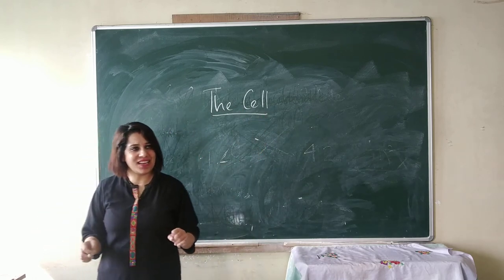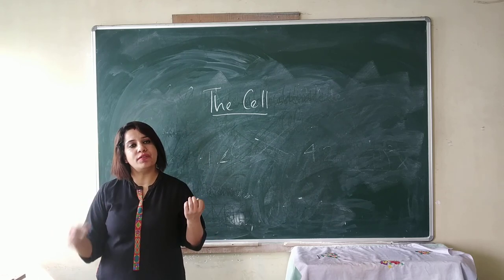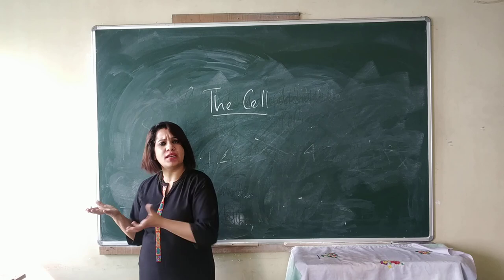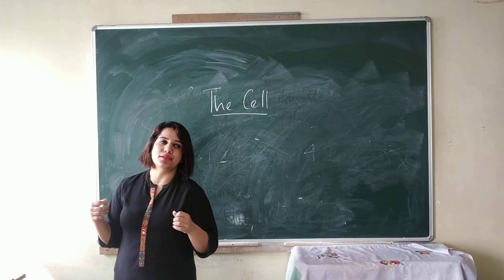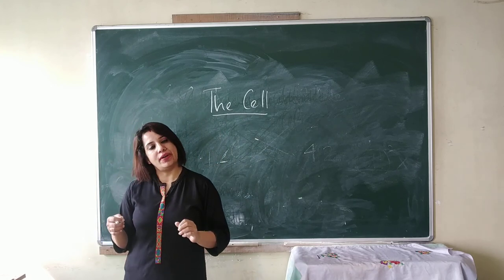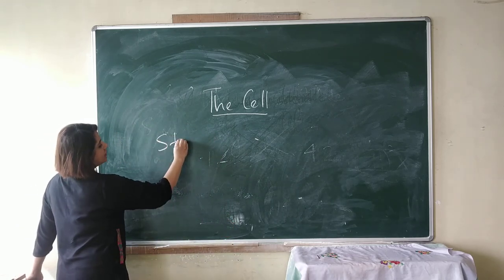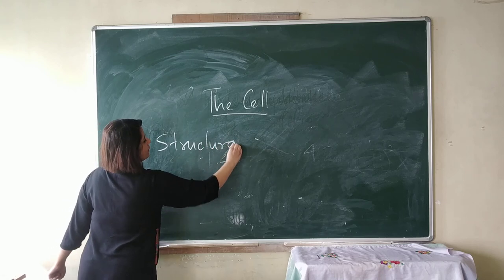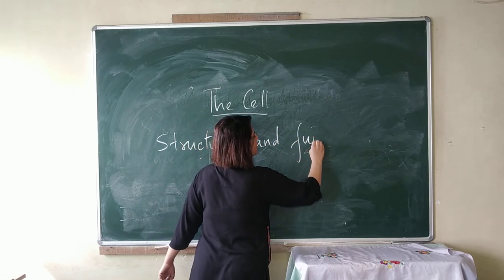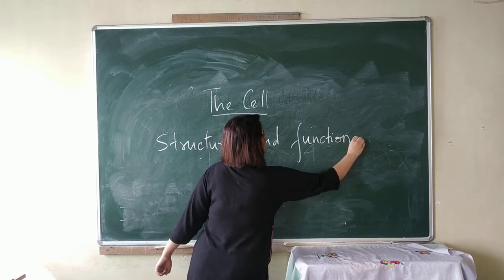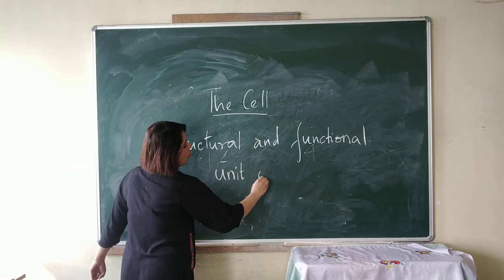Now, what is a cell? A house is made up of bricks, it may be made out of stones, it may be made out of wood, but every house is made up of something or the other. Similarly, all living organisms are made up of cells. Even we are made up of cells. So, cell is the structural and functional unit of life.